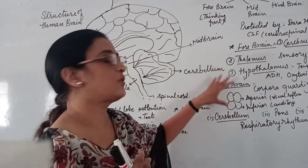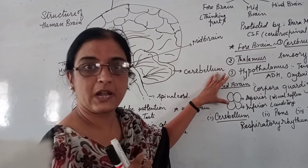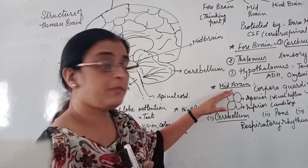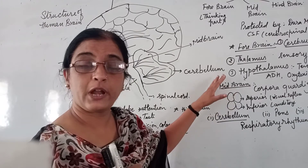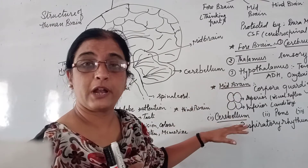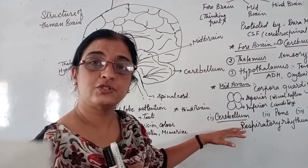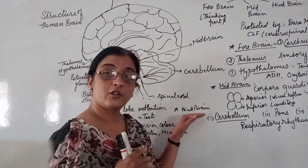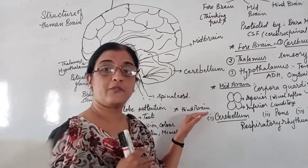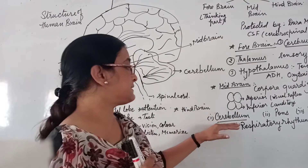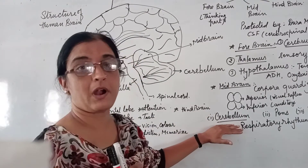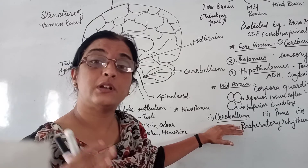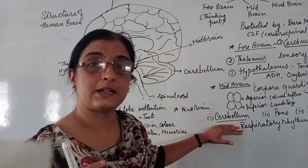The cerebrum is divided into two parts: the left cerebral hemisphere and the right cerebral hemisphere.